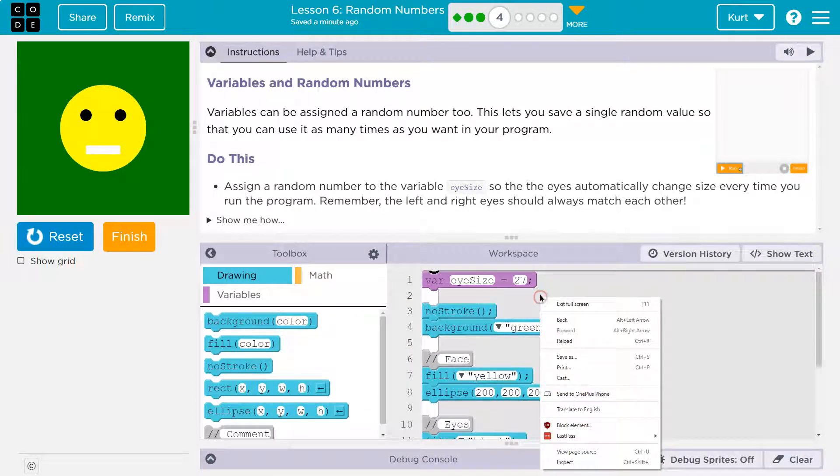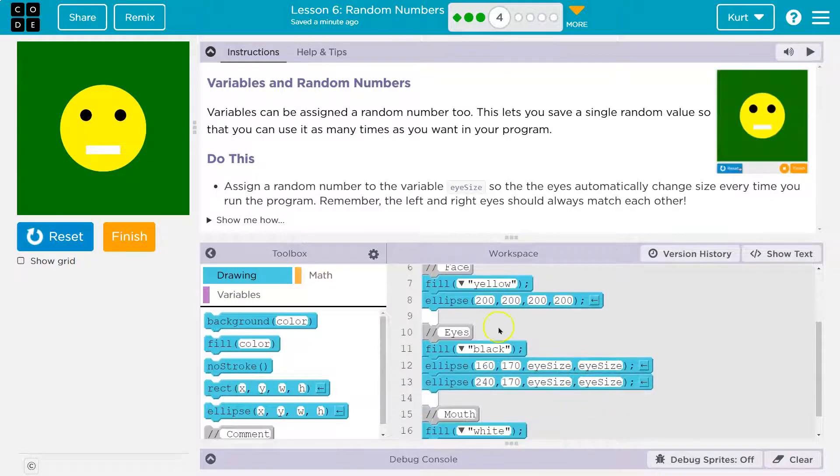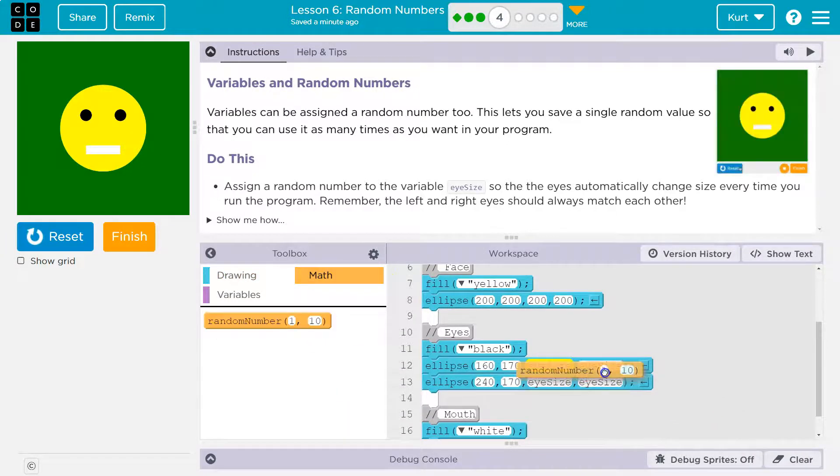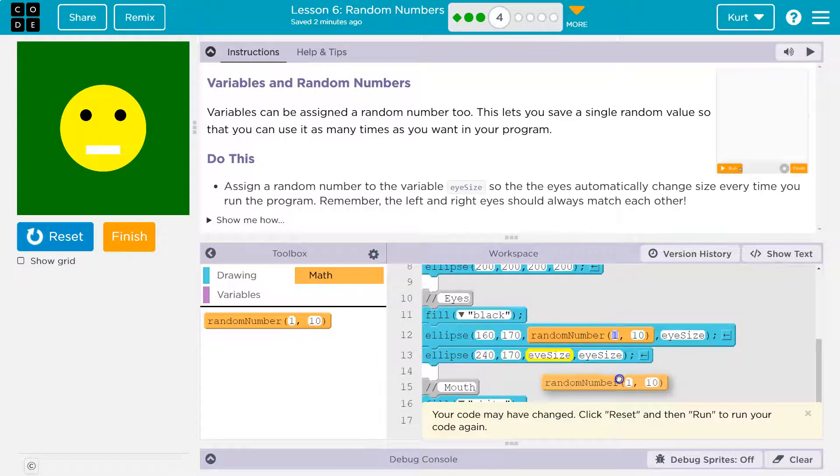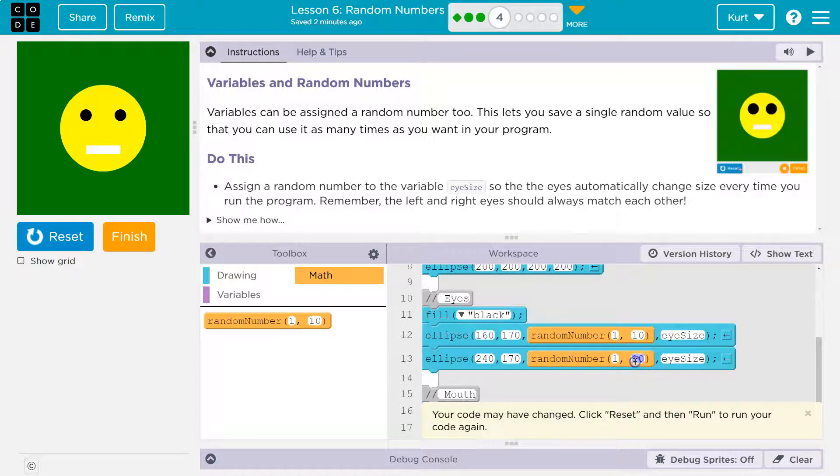And the reason why is random number is different every time it is run. So if I'm just going to, for instance, iSize is here, right? I'm going to put it here and here, which you shouldn't do, but I want to show you something. I'm going to say one to 100, one to 100, reset run.